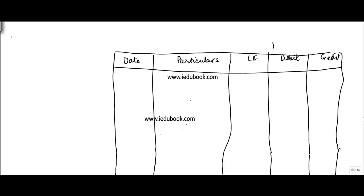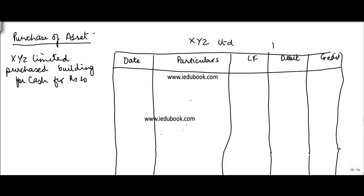Okay, now we will see the journal entries for purchase of assets. Let's say this is the journal of XYZ Limited. XYZ Limited purchased building for cash for rupees 2 lakh and furniture on credit from ABC for rupees 1 lakh.